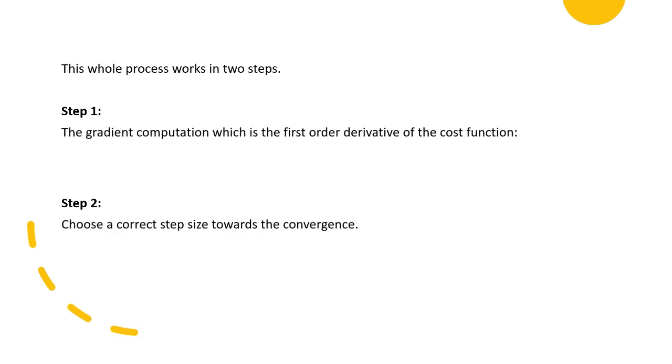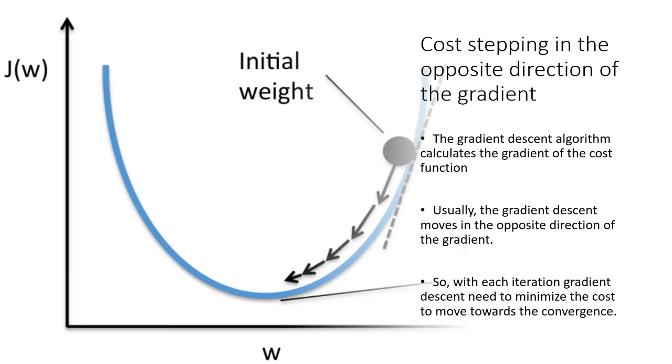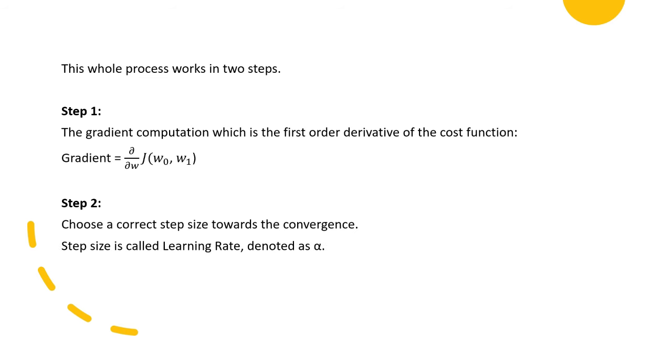The whole purpose of the gradient descent algorithm is to bring the cost function down as low as possible. This whole process works in two steps. Step one, the gradient computation, which is the first order derivative of the cost function with respect to the weights. Second step is to choose a correct step size towards the convergence. If you have a look at this graph, this cost function, this black ball, it goes down to the minimum step by step. It takes several steps. So we need to choose a correct step size for the gradient descent to efficiently go to the minimum location. Step size is also called learning rate, often denoted as alpha. So the gradient becomes alpha times partial differentiation of cost function with respect to w or weight.